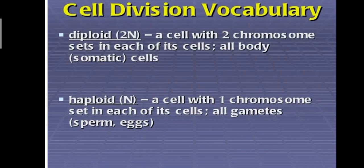Some concepts according to the cell division: diploid. A cell with two chromosome sets in each of its cells, all body cells, i.e. somatic cells are two in number. And haploid, a cell with one chromosome set in each of its cells, all gamete cells, they are haploid in number. For example, sperm and egg cells.